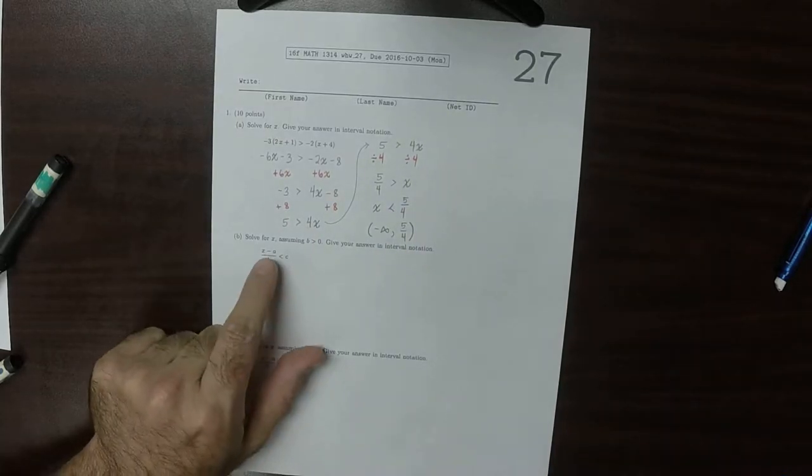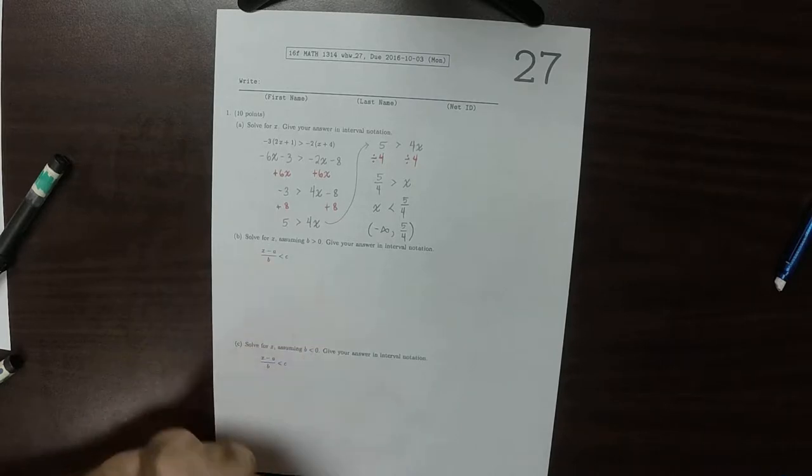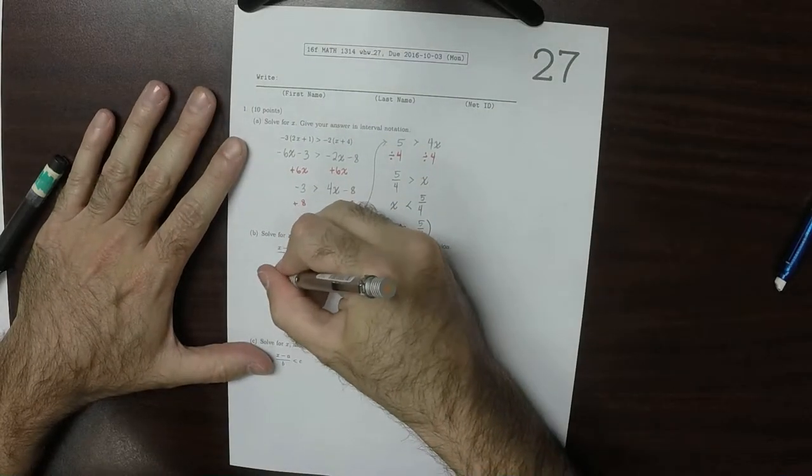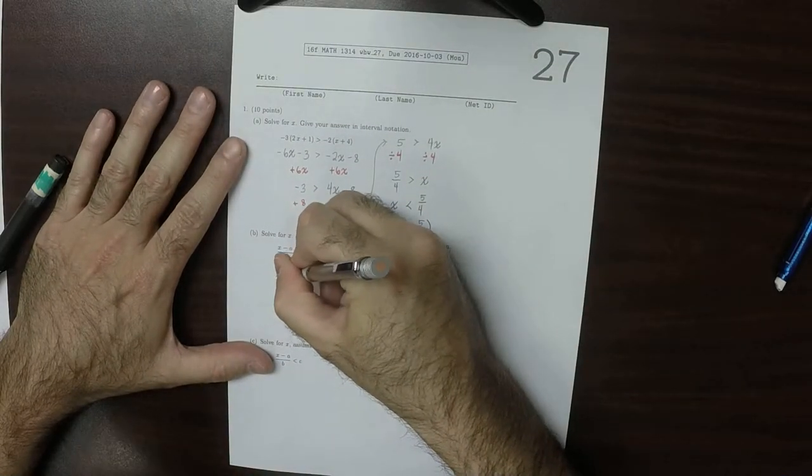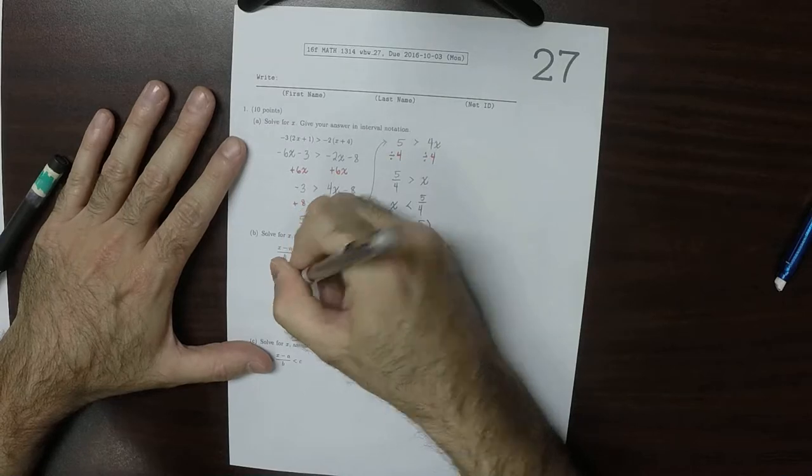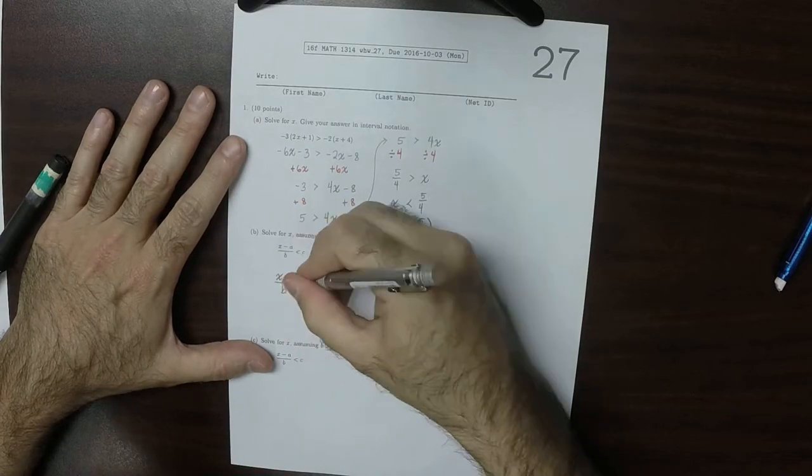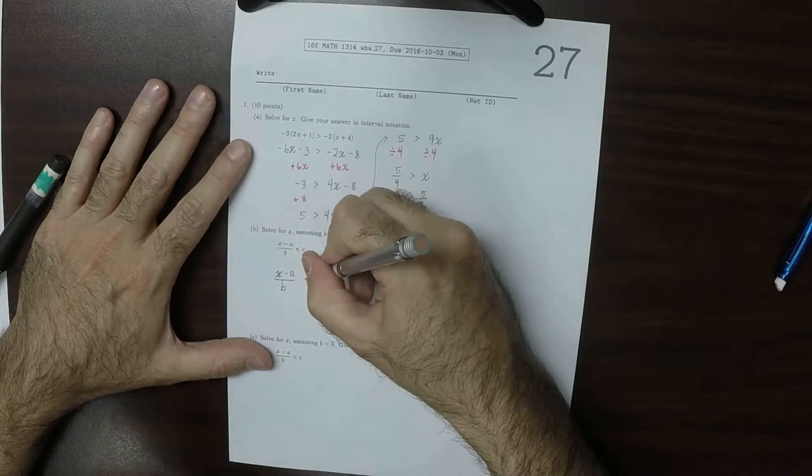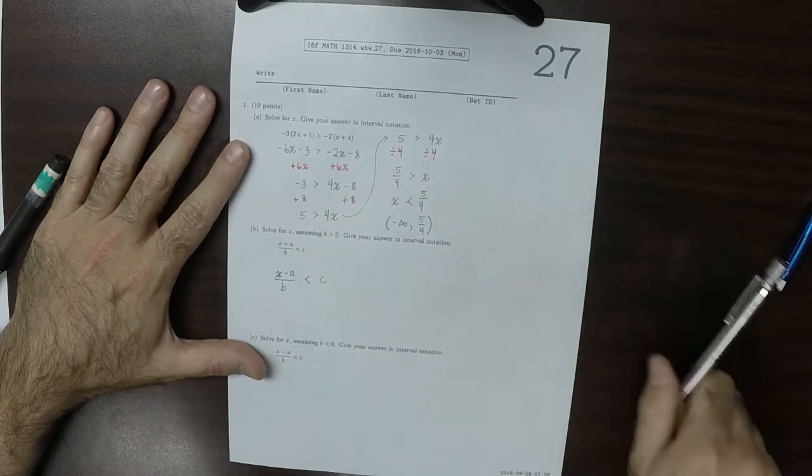So part b, solve for x assuming that b is positive. Give your answer in interval notation. Okay, so then what we're going to do, x minus a over b is less than c, like this.